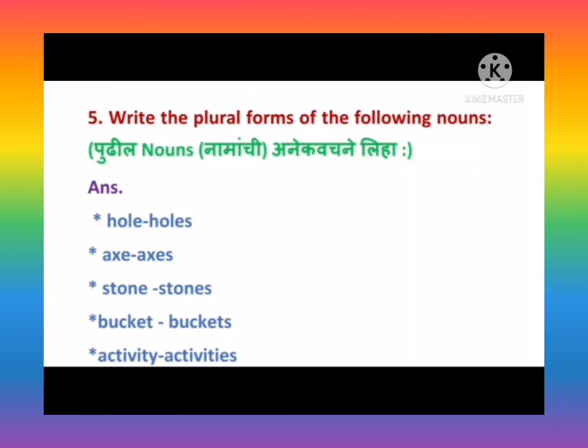Henry asks her with what he should sharpen it. She tells him to sharpen it with a stone. Henry tells her that the stone is dry. Lisa tells him to wet it. Henry asks her with what he should wet it. Henry asks her how he should get the water. She tells him to get it in a bucket. Henry tells her that his bucket has a hole.